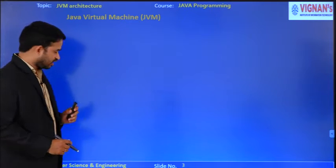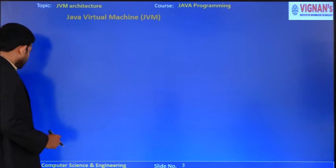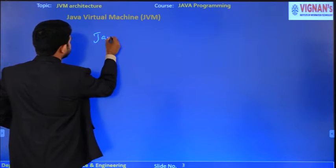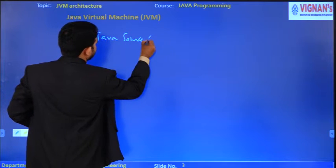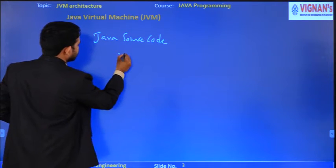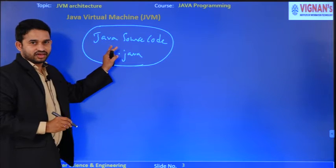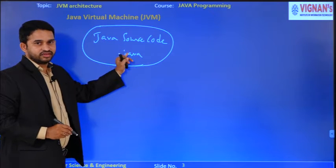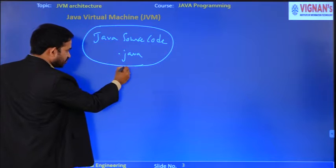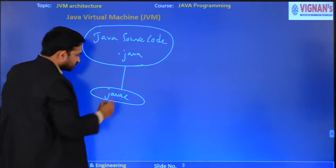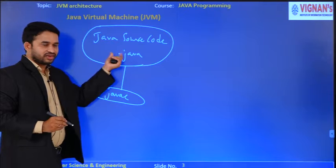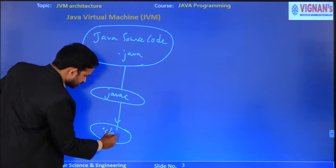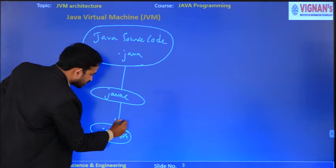Before explaining the architecture, I want to explain how Java programming is executed. Take a Java source file with extension .java — just as in C we use .c, in Java we use .java. We give it to the Java compiler, which compiles the .java file and converts it into bytecode, also called a .class file.